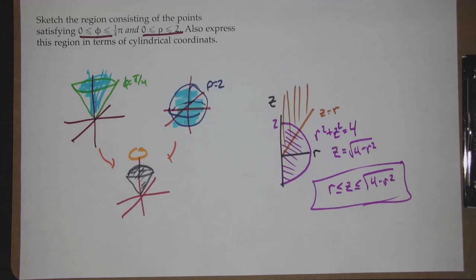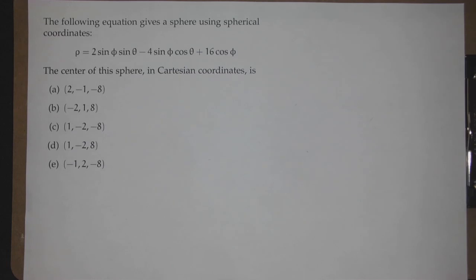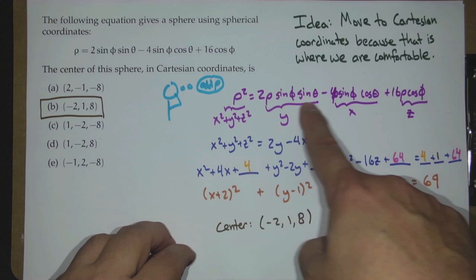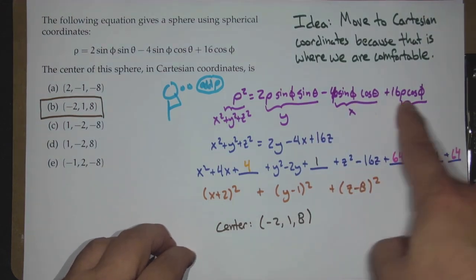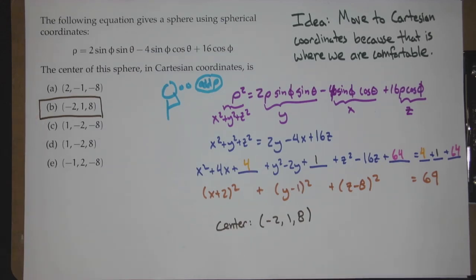For our final multiple choice problem: given the equation rho = 2 sine phi sine theta − 4 sine phi cosine theta + 16 cosine phi in spherical coordinates, find the center of the sphere in Cartesian. First step: multiply everything by rho. That gives rho², rho sine phi sine theta, rho sine phi cosine theta, and rho cosine phi. Using our conversion formulas, we get back to familiar quantities. The center is (−2, 1, 8).